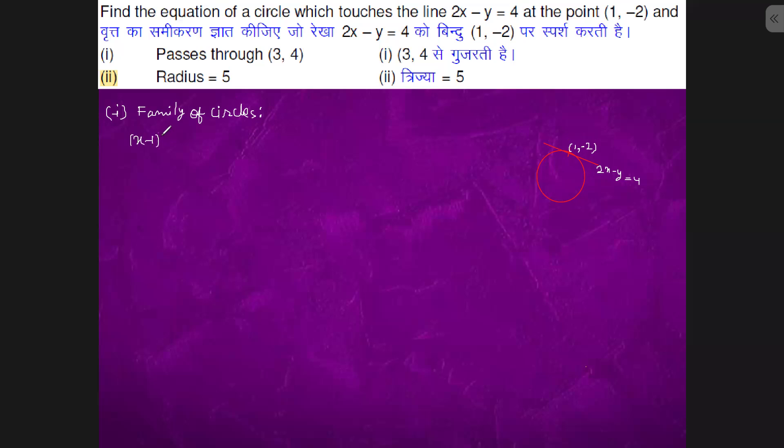whole square plus (y + 2) whole square plus lambda(2x - y - 4) = 0. This is a family of circles.